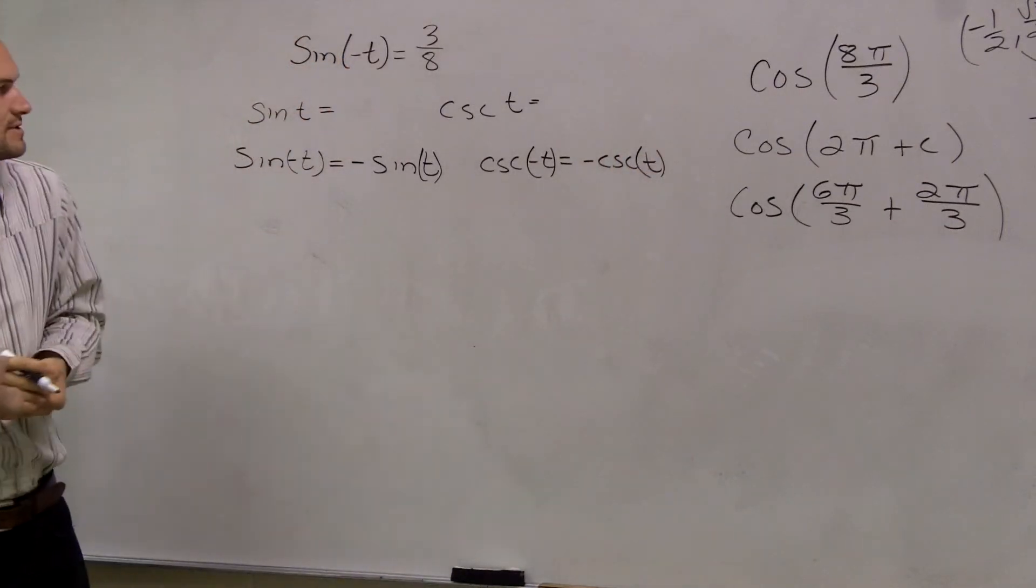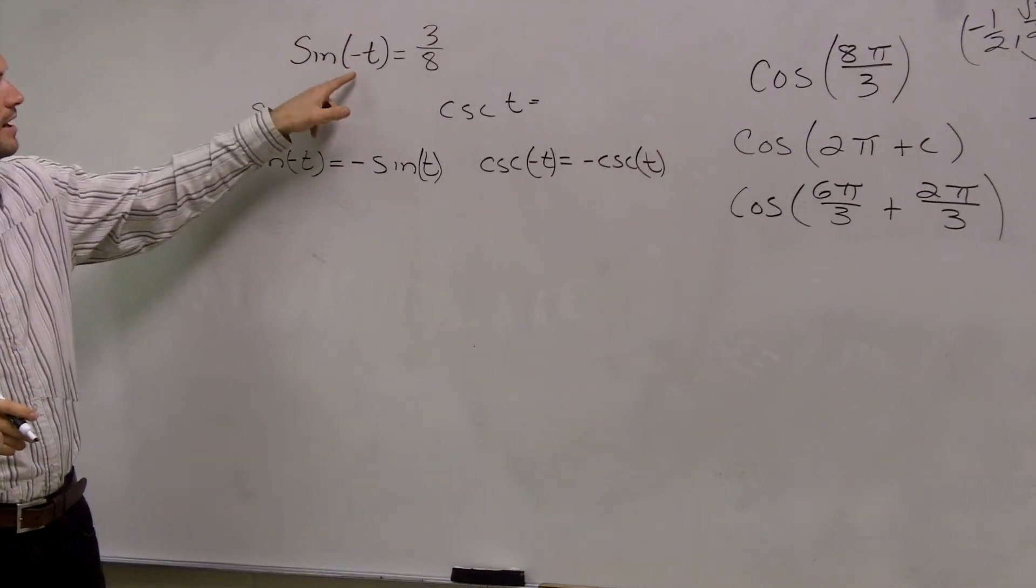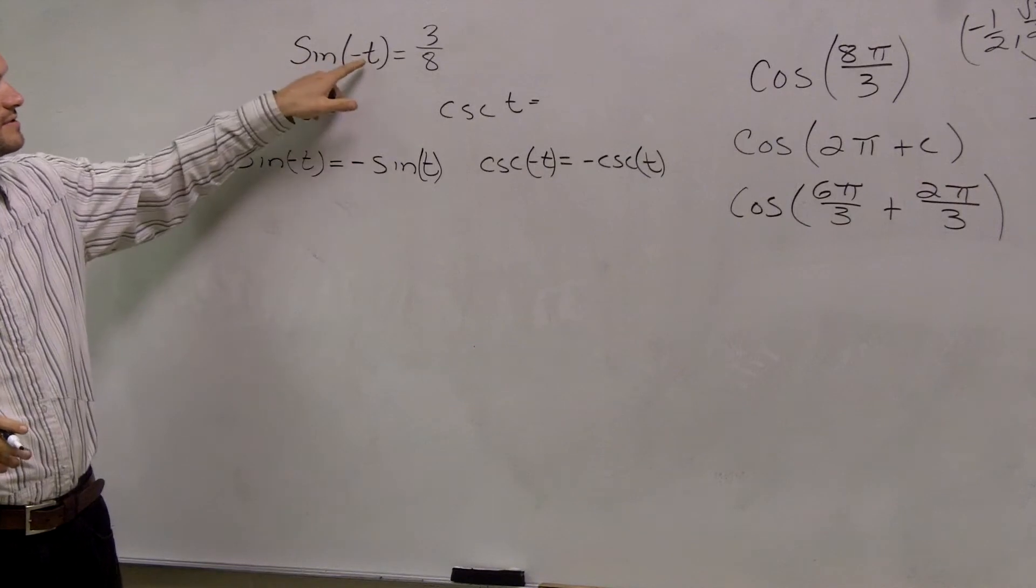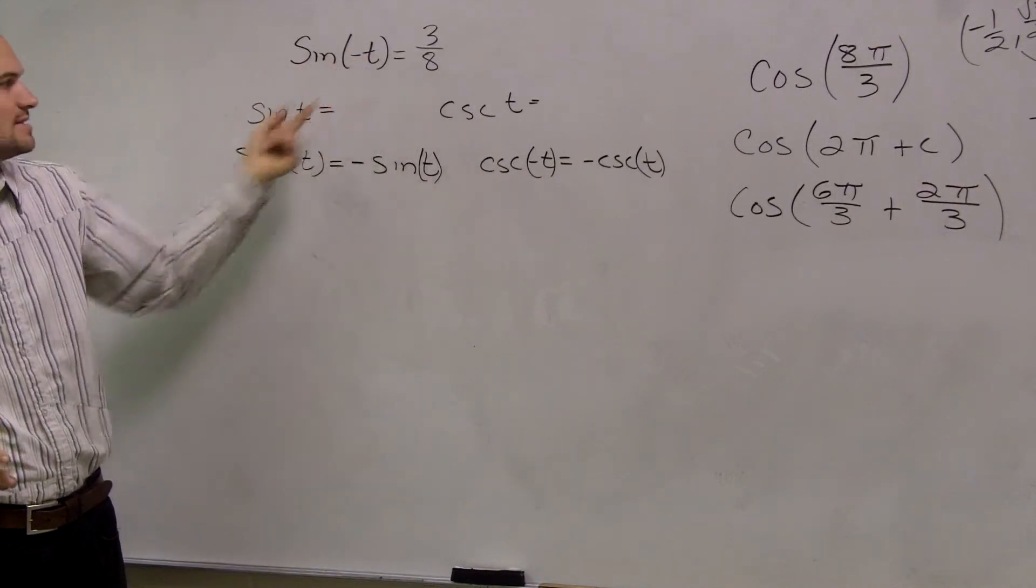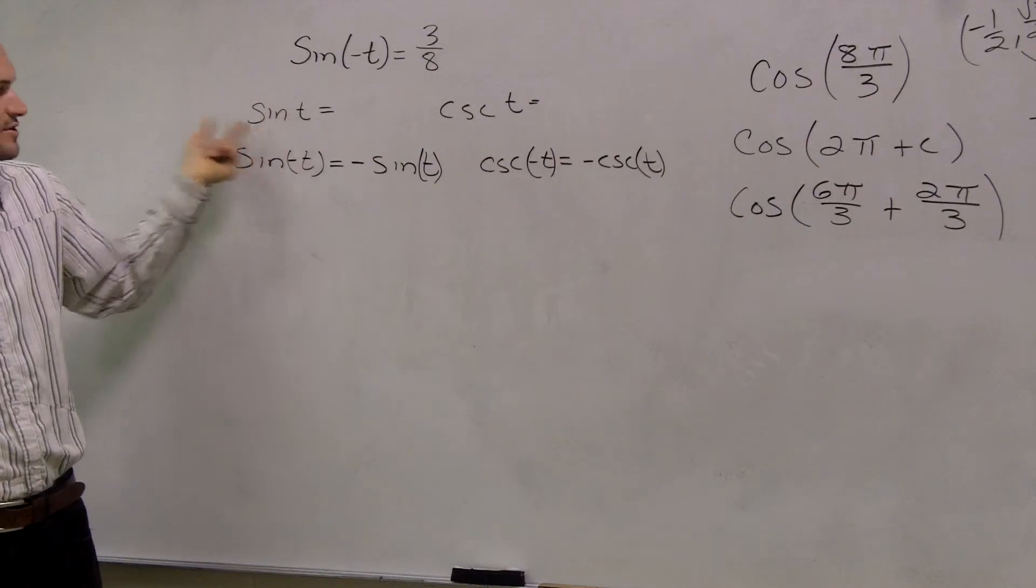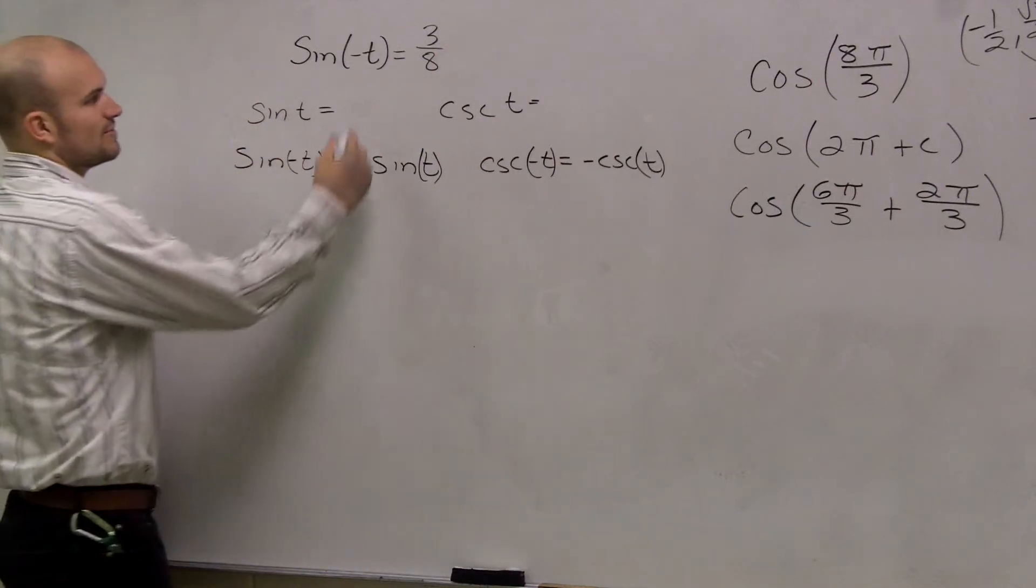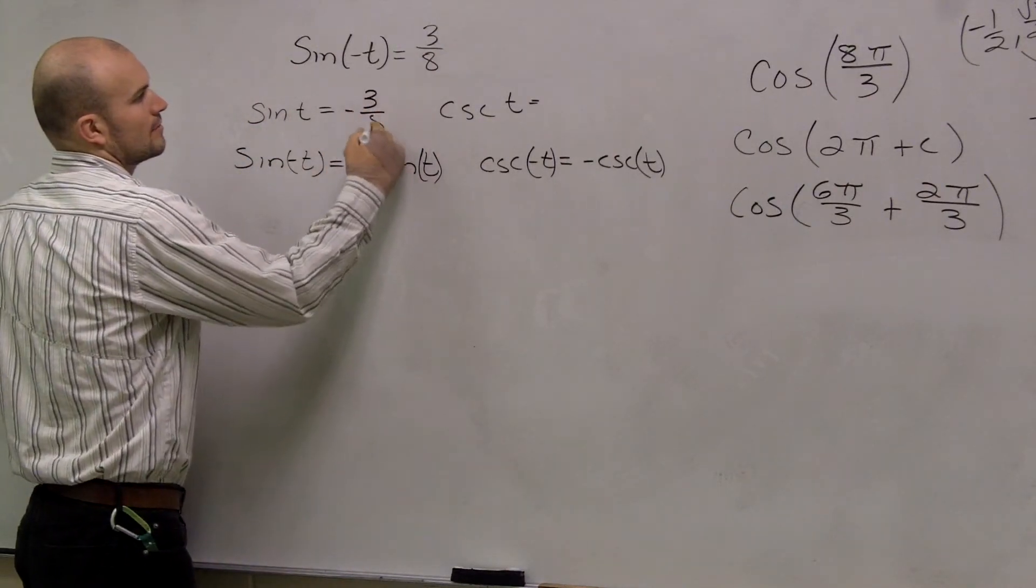So this one's fairly simple. If I have negative, so if sine of negative t equals 3/8ths, then just the regular sine is just going to be negative 3/8ths.